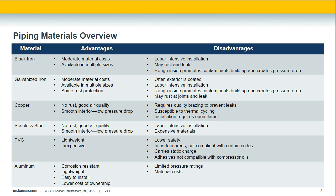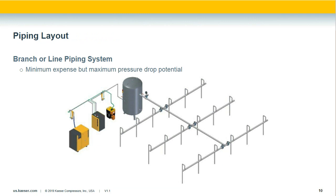Now let's talk about piping layouts. With a branch or line piping system, compressed air travels from the compressor room through a main header pipe and branches out to points of use. As you move down the pipe, the longer the run, the more pressure drops at the point of use. It's recommended to maintain a 10% or less pressure drop between the compressor generation and the point of use. Piping can have a huge effect on meeting that number, especially if undersized.